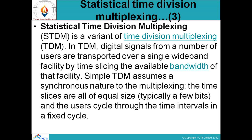STDM में हम एक complete bandwidth को different time slices में divide करते हैं। In simple TDM, it assumes a synchronous nature to the multiplexing — the time slices are of equal size, typically a few bits, and the users cycle through the time intervals in a fixed cycle। STDM में typically एक complete bandwidth को equal size time slots में divide करके subscribers को allocate कर दिया जाता है ताकि वो अपने data को उस particular time में send कर सकें।